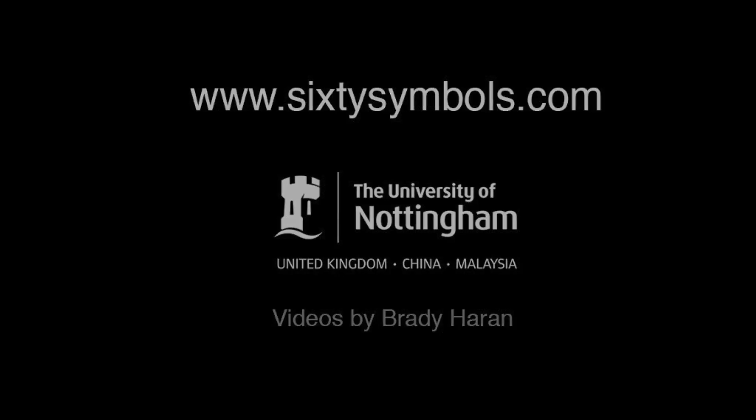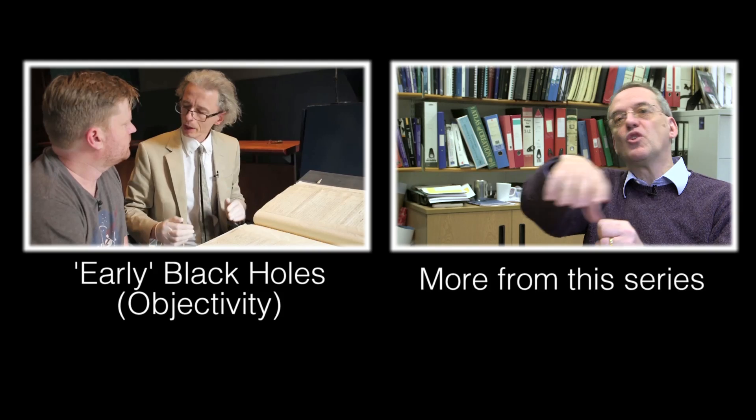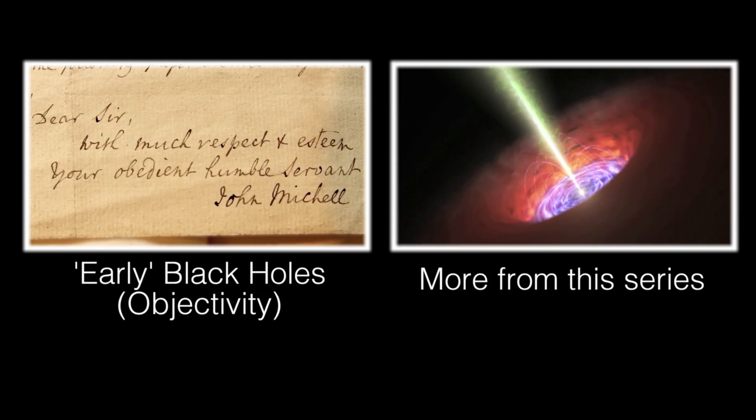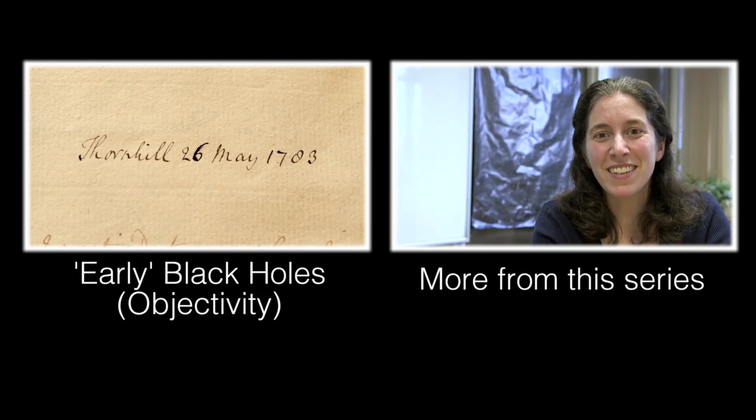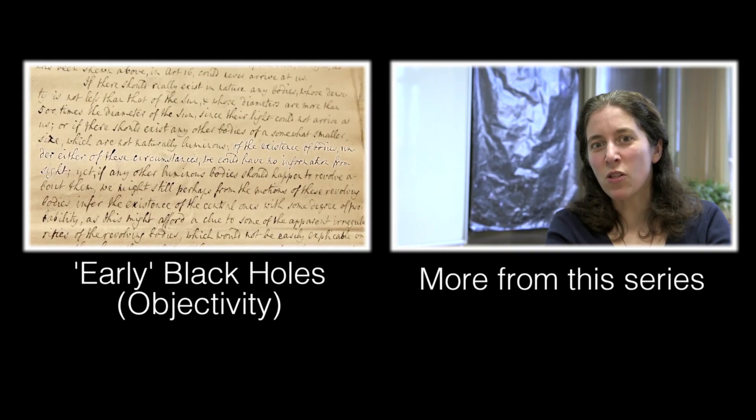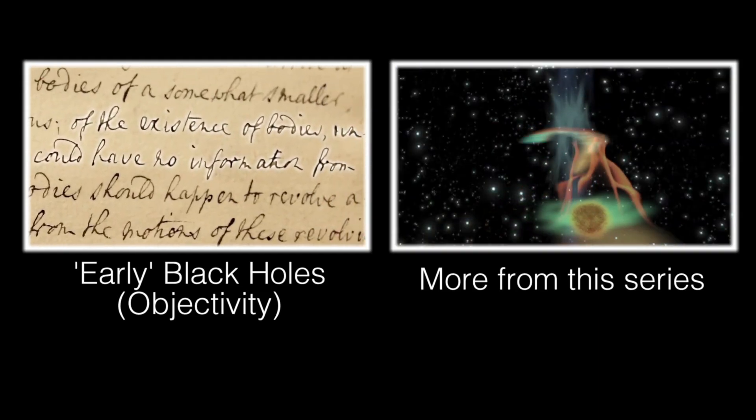An example of a star or an object whose gravity was so great that light couldn't escape from it. So basically, what's being hinted at here for the first time is a black hole. Of the existence of bodies under either of these circumstances, we could have no information from sight.